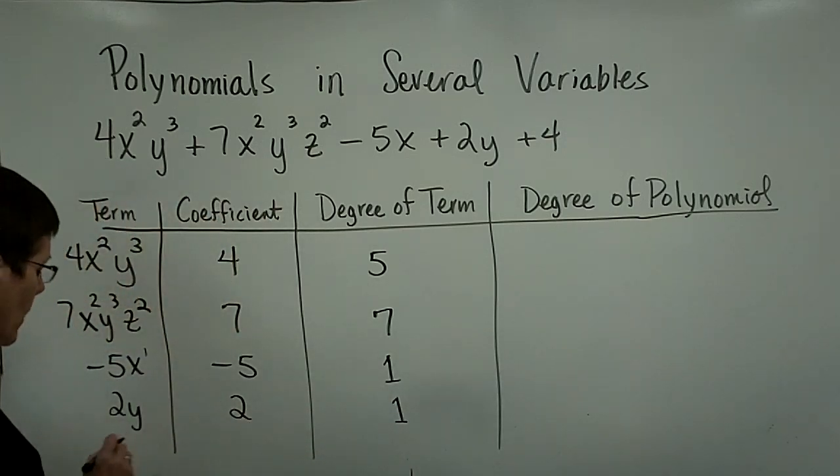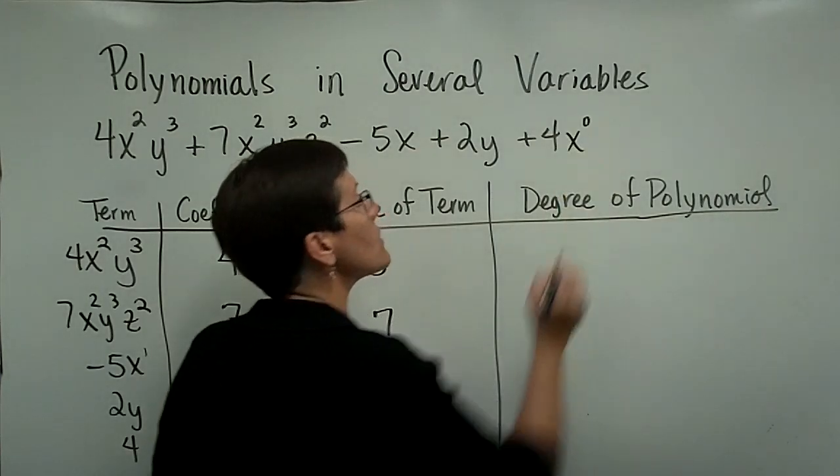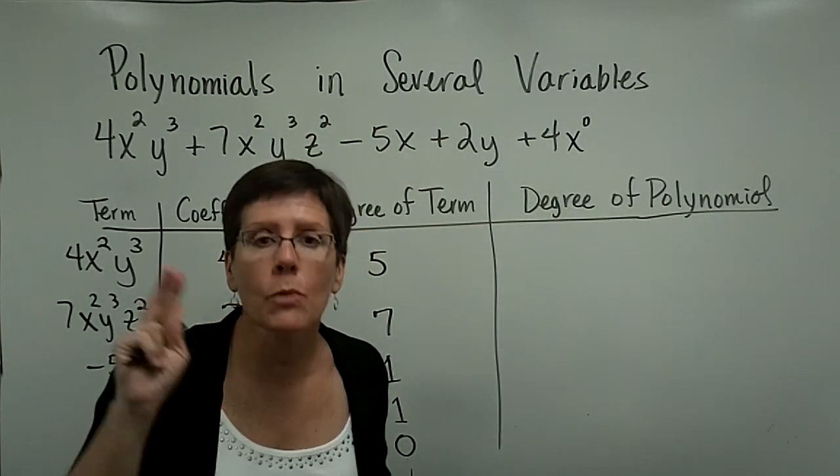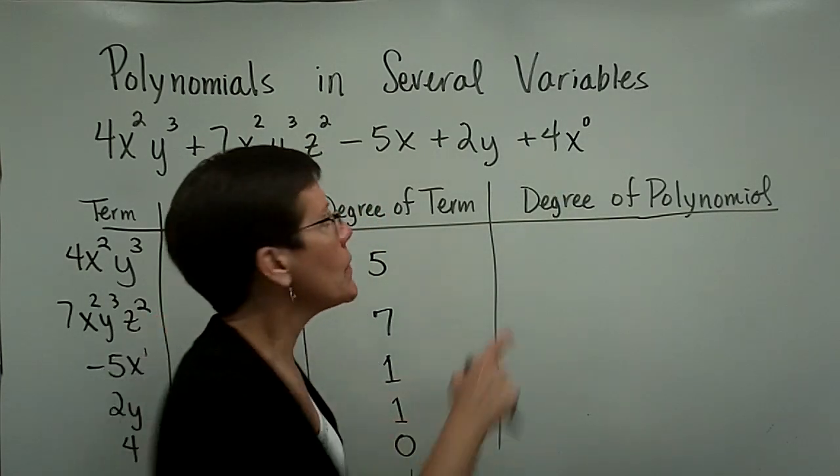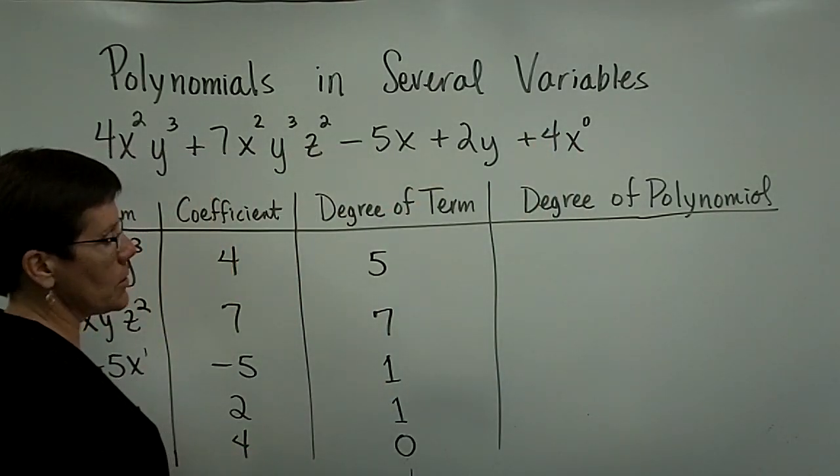The next term is a positive 2y, so its coefficient is 2 and its degree is also 1, because y is raised to the first power. The last term is 4. Its coefficient is 4, and its degree is 0, because it's thought of as 4 times x⁰. Remember, anything raised to the 0 power is 1. So 4 times 1 is 4. We say its degree is 0.